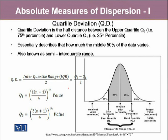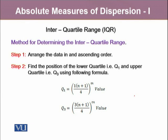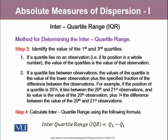We use the usual method to calculate these quartiles as discussed in previous modules. Looking at this frequency curve, the first point represents the first quartile and the other point represents the third quartile. Quartile deviation focuses on this middle 50% of the data and completely ignores the rest. To determine the interquartile range: first, arrange the data in ascending order; second, find the position of Q1 and Q3 using the standard formulas; third, identify the values of Q1 and Q3; and fourth, calculate the interquartile range as the difference of Q3 minus Q1.